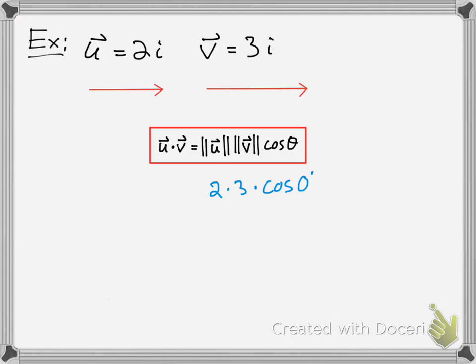Then you simply take the magnitude of those vectors, and since it's going in the same direction with no angle, it's just the component, which would be two times three, which is six, times the cosine of zero, which is one, and you get six. So that's a pretty basic example.